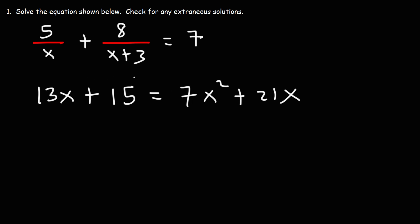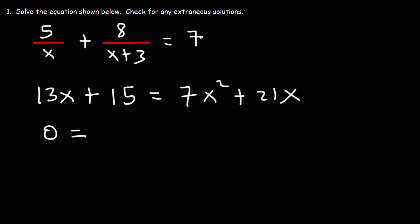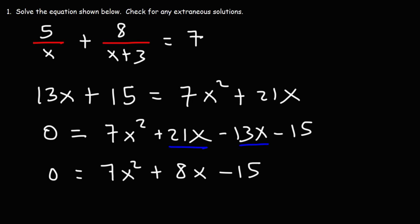Now I'm going to move everything from the left side to the right side. The two positive terms on the left will become negative on the right, leaving zero on the left. On the right side we have 7x squared plus 21x minus 13x minus 15. Combining 21x and negative 13x: 21 minus 13 is positive 8, so we have 7x squared plus 8x minus 15 equals 0.